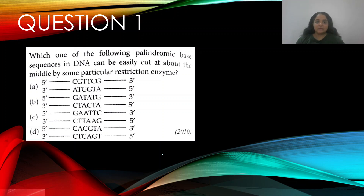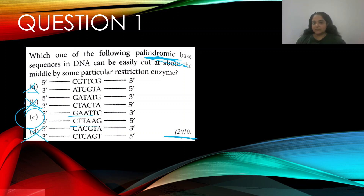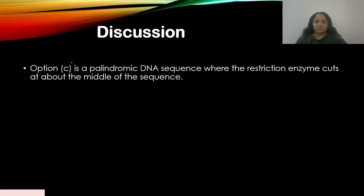Question 1: Which one of the following palindromic base sequences in DNA can be easily cut above the middle by a particular restriction enzyme? This appeared in 2010. Looking at the options: option A is not palindromic, option B is also not palindromic, option C — CGAATTCGAATTC — is a palindromic base sequence, and option D is also not palindromic. So the right answer is option C.